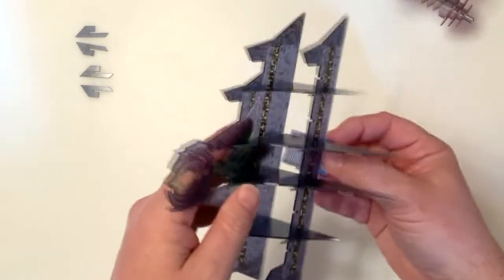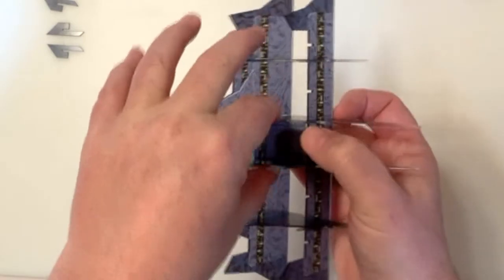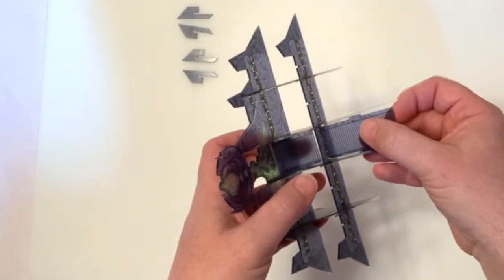Step three, attach the longer stair piece to the bottom of the ramp. So this one works best if you bring it up from beneath and the shorter stair piece to the top of the ramp.